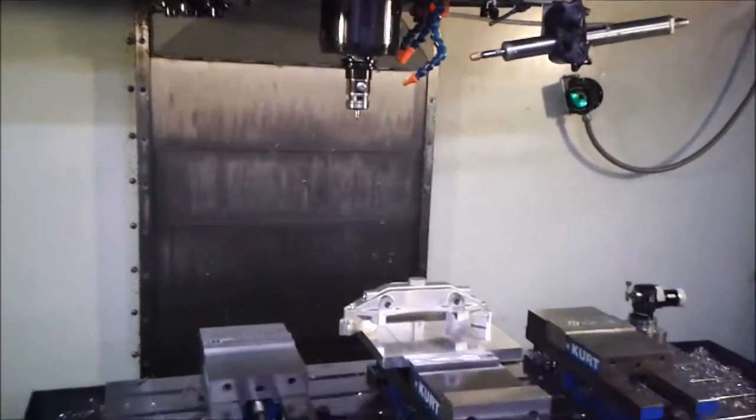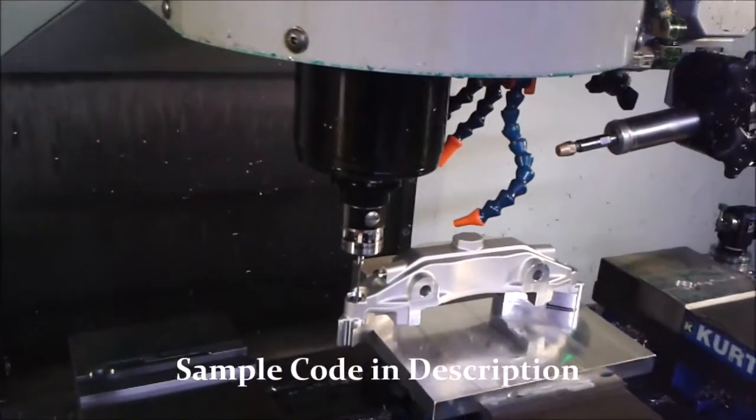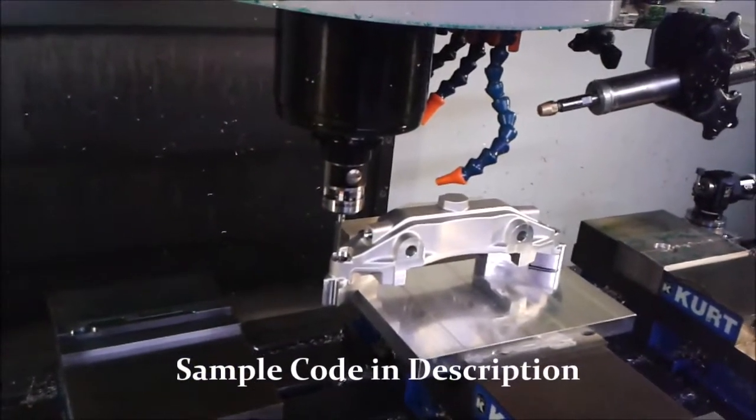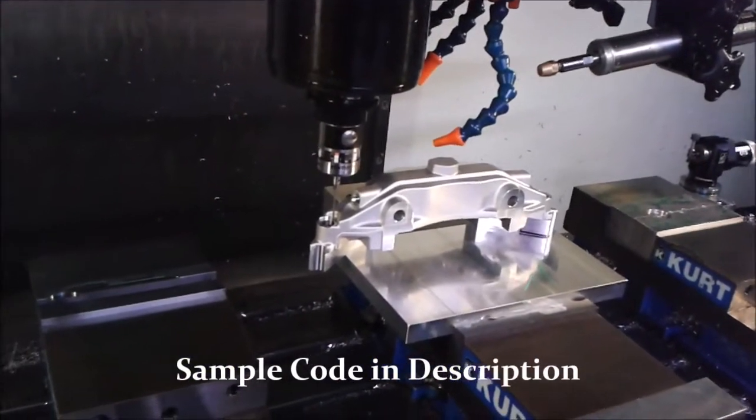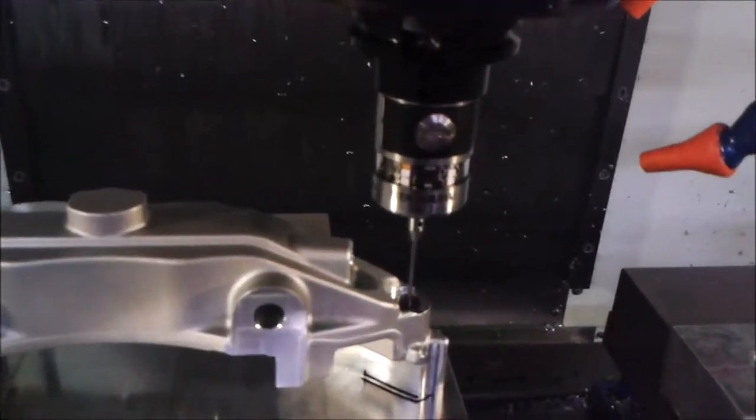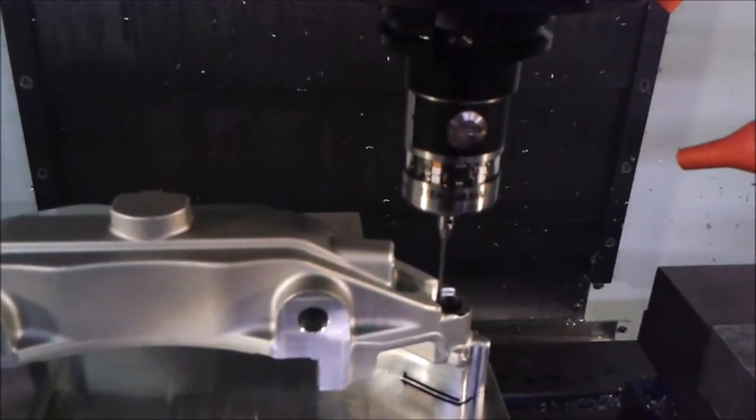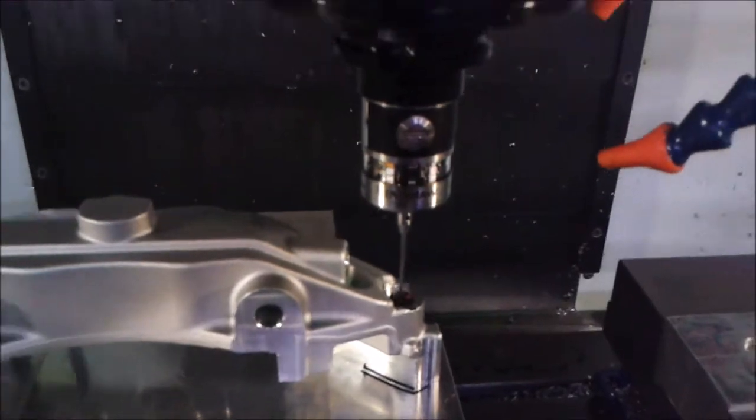Here we see the probe come in and touch off the center of the first hole. This is done to establish the origin of the part. From there it moves to the second hole and probes the center of the second hole. And this is done to find the angular error from the programmed position.